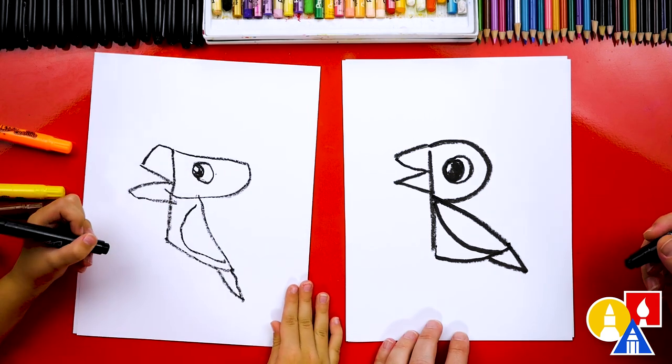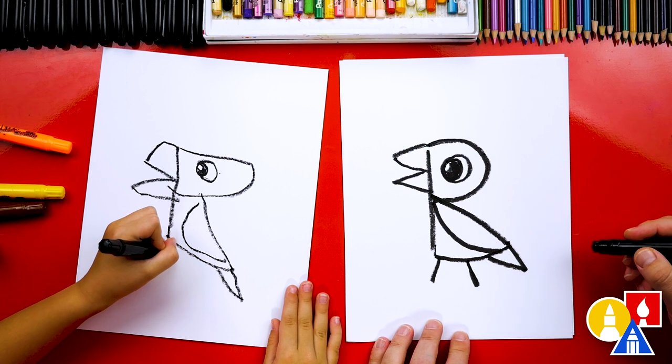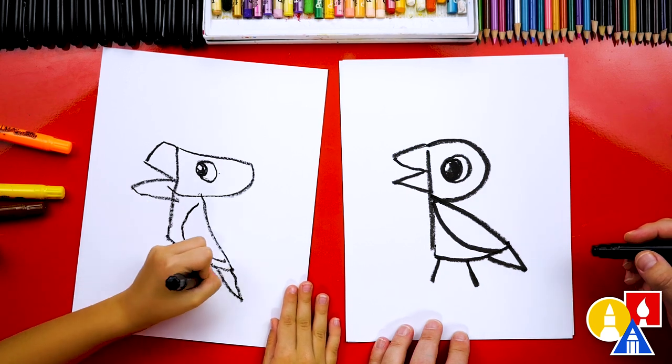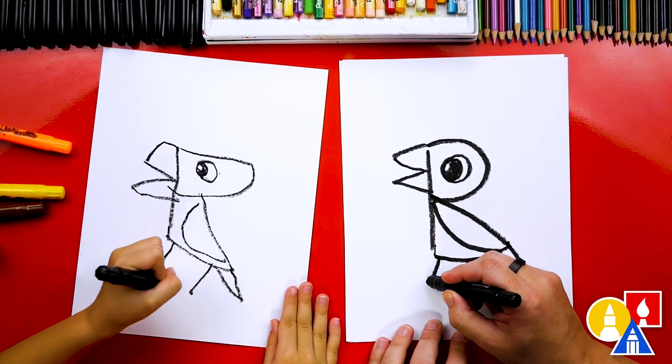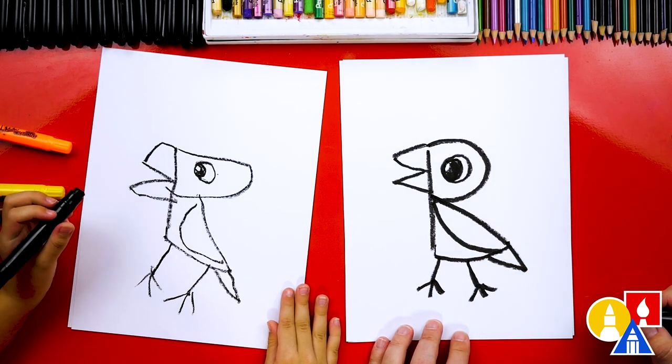What should we draw next? The legs. Yeah, let's do it. We're going to draw a line that comes down here. I'm going to add another line for two legs. One and two. And then let's draw the little toes on it too. One, two, three. And one, two, three. There's our Robin.